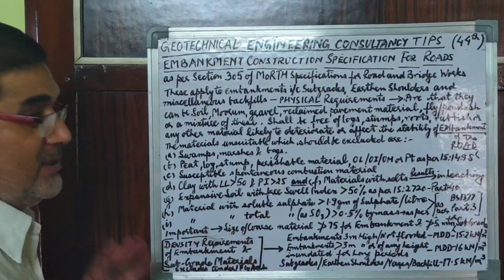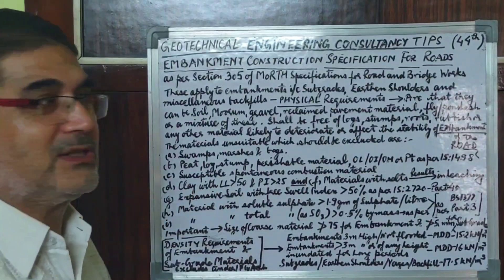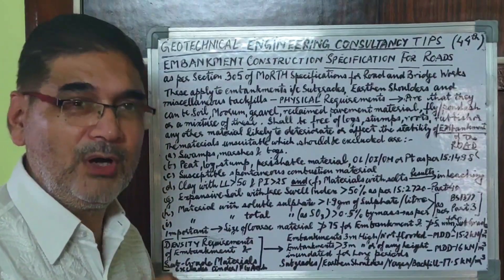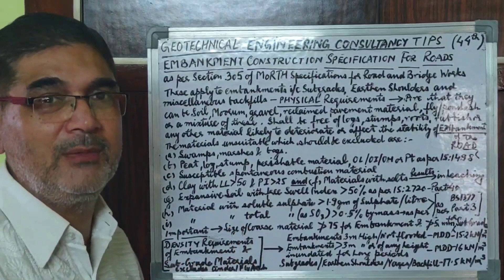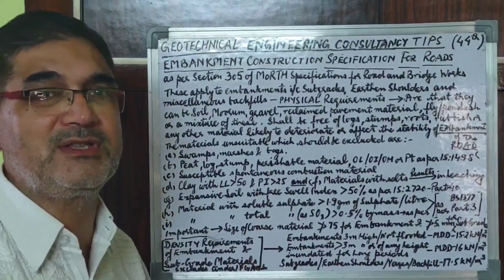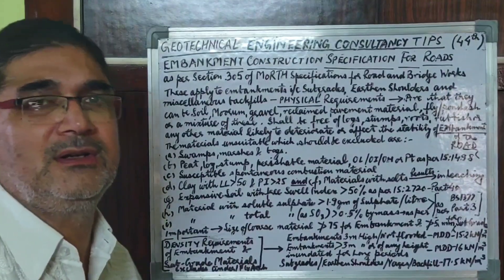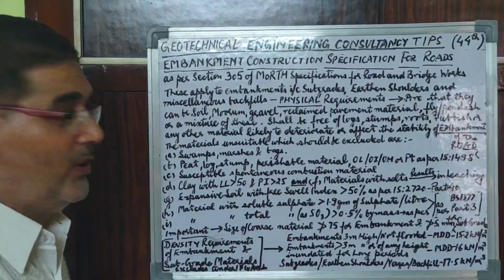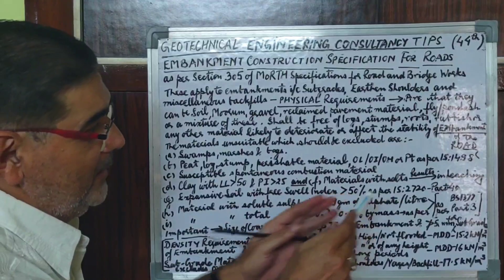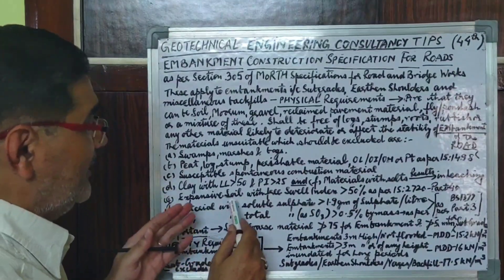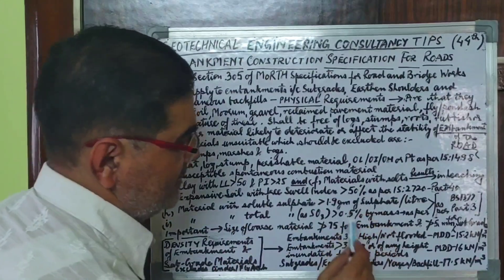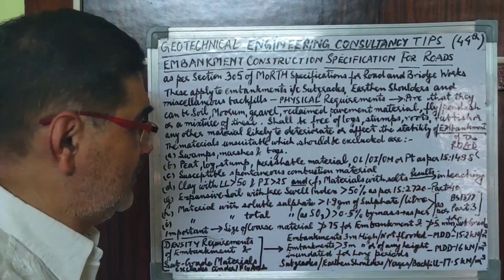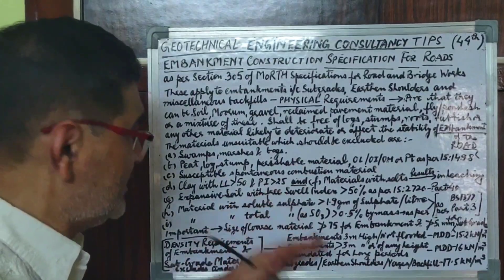Expansive soils — soils in which due to seasonal moisture variation the soil may shrink or swell, also called black cotton soil — should definitely be avoided as embankment material for roads. Specifically, soils with a free swell index greater than 50% as per IS 2720 Part 40 should be excluded. This standard code is used for determining the free swell index, and such soils must be avoided.